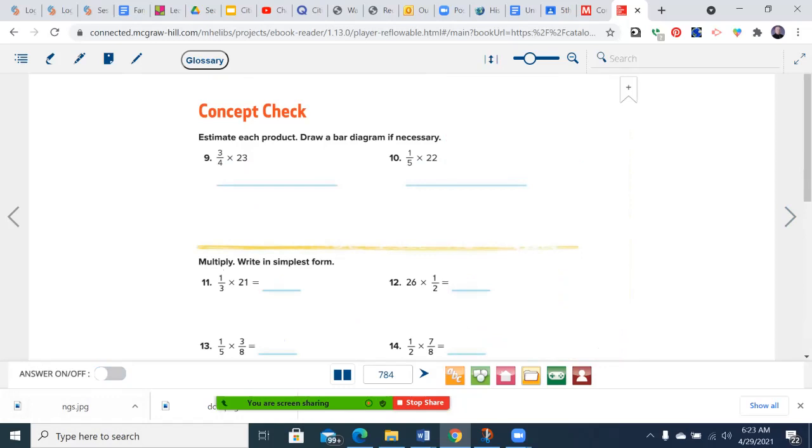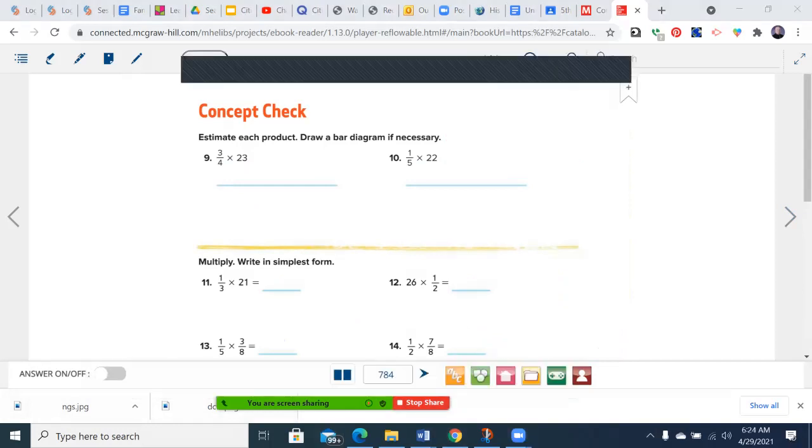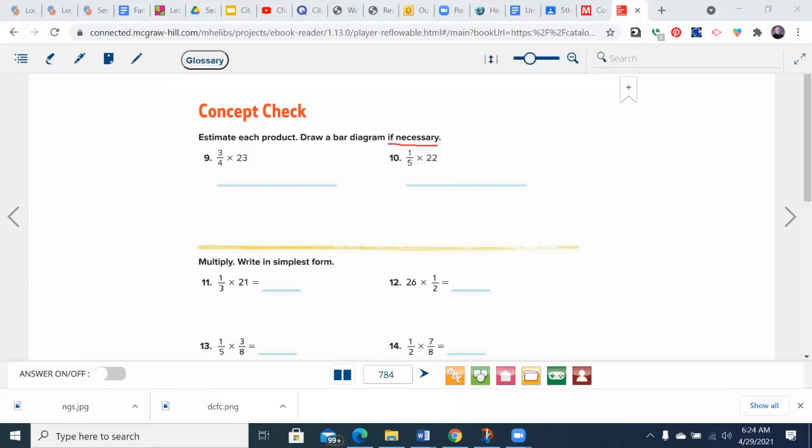All right, let's go through some of these problems. Estimate each product, draw a bar diagram if necessary. You don't have to. I may model it just on my end, but you won't have to. So I'm going to do three fourths times 23, but I'm estimating.